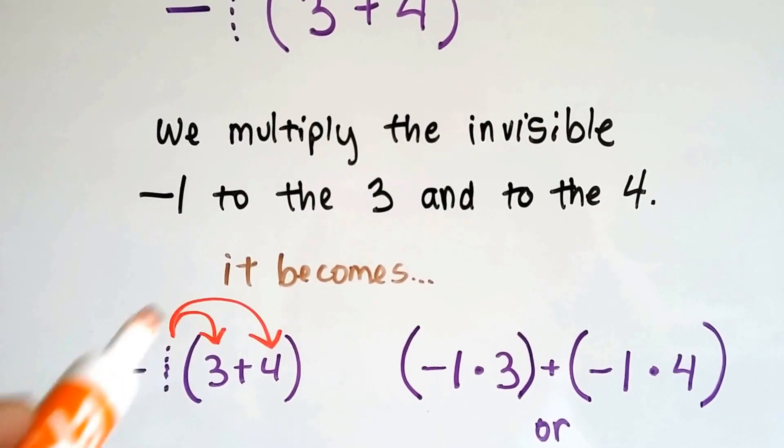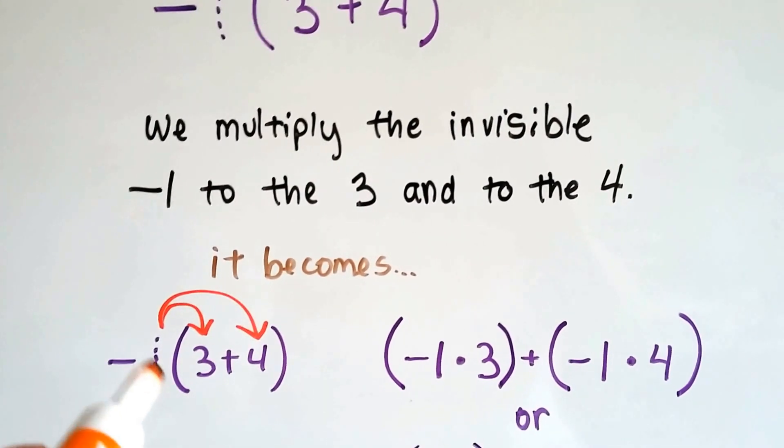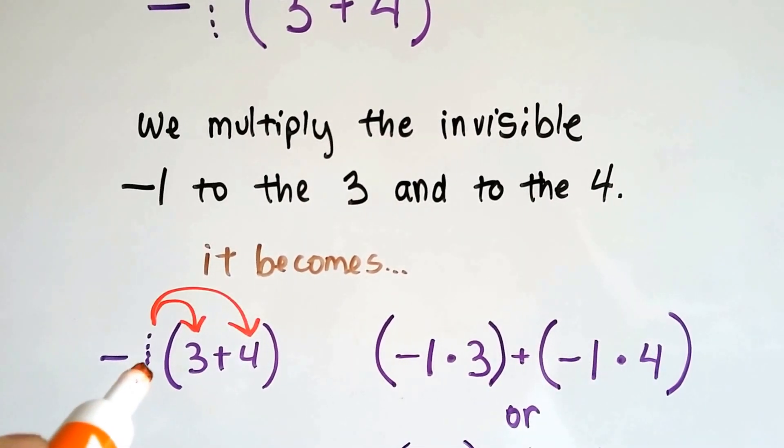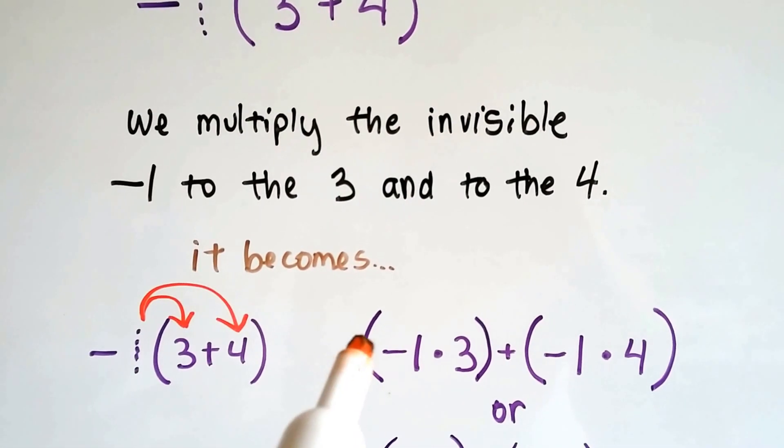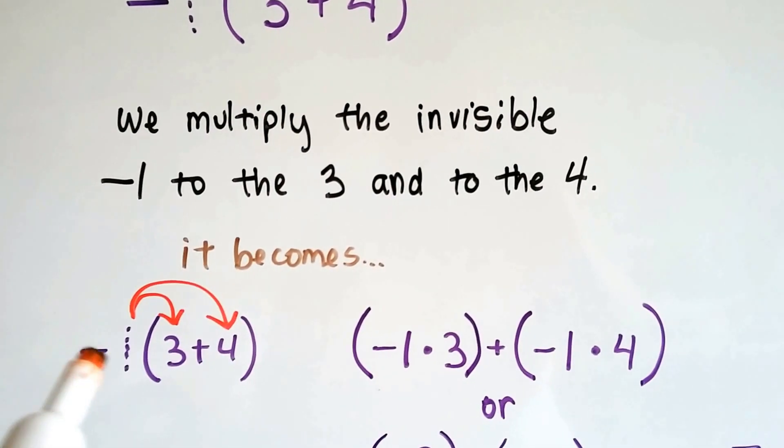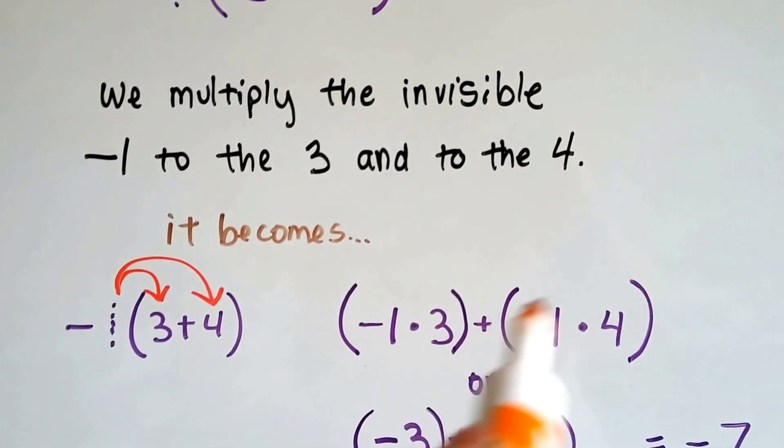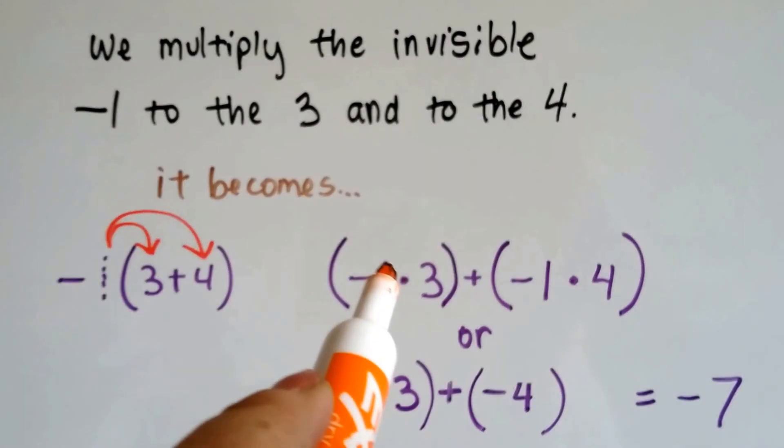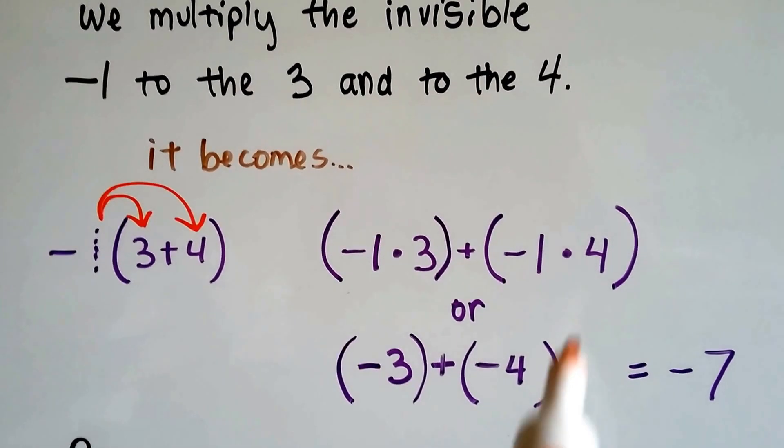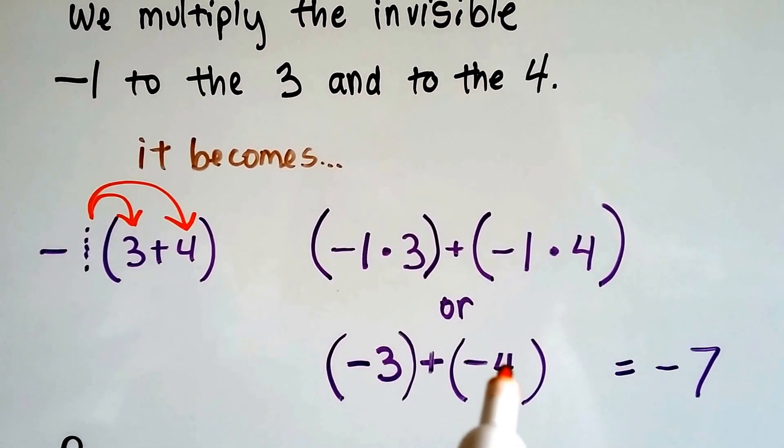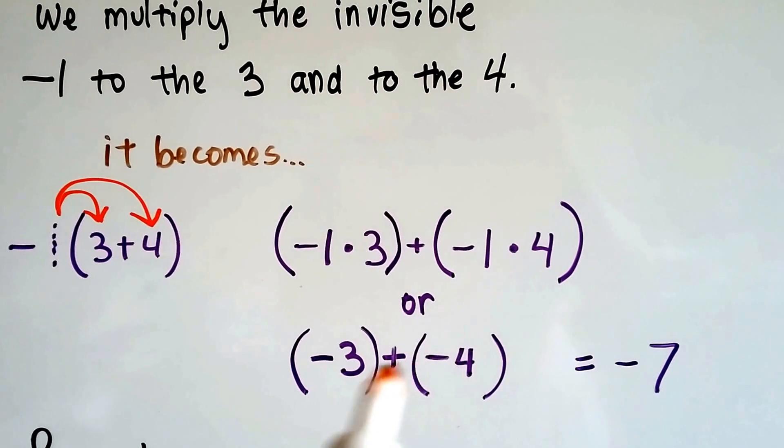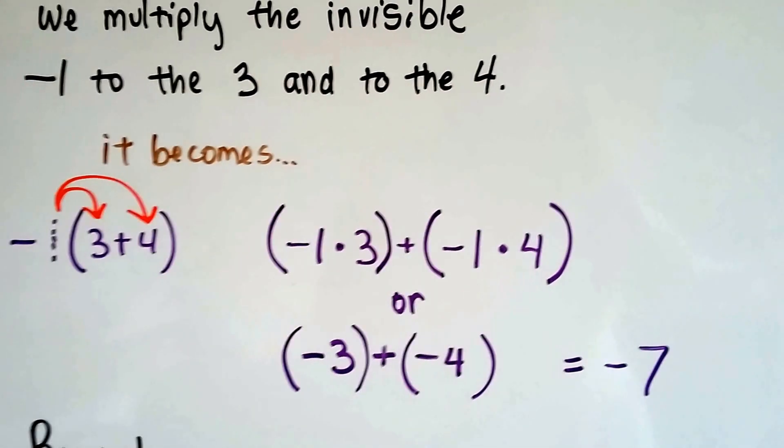And we can distribute this negative 1 to each of these. We multiply the invisible negative 1 to the 3 and to the 4, to each one of them, just as if there were some other number here. And it would become negative 1 times 3 plus negative 1 times 4. And we can solve: negative 1 times 3 is negative 3 and negative 1 times 4 is negative 4. They have like signs and we're adding them, so it's negative 7.